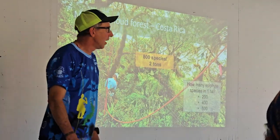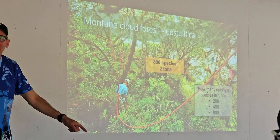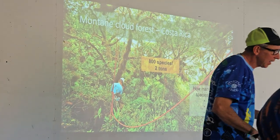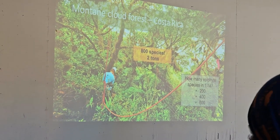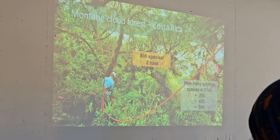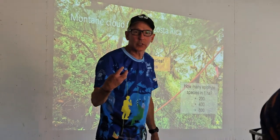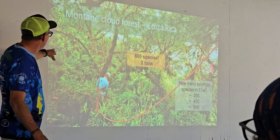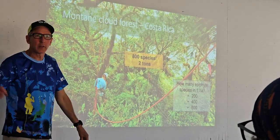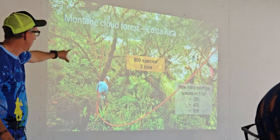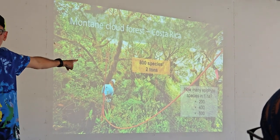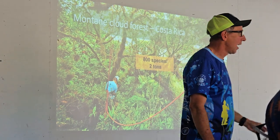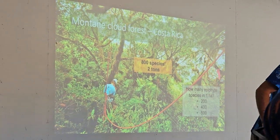The answer is 800 species. Approximately two tons of plants are growing on the surface of other plants. If you were to remove the epiphytes from this photograph, you would lose about 35% of the green matter in the top of the canopy. That's amazing. And I'm going to tell you in a minute why epiphytes matter.